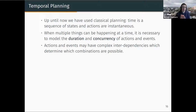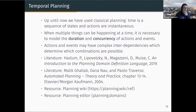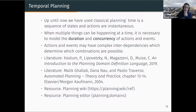These actions and events can have complex interdependencies which determine which combinations are possible — for example, maybe it's possible to unload multiple packages from a truck in parallel, but not while the truck is also driving away. There are two books I'd recommend: Automated Planning Theory and Practice, which has a chapter on this topic, and more recently An Introduction to the Planning Domain Definition Language, which covers everything you need to write PDDL. There's also planning.domains online editor and a planning wiki being written by a PhD student at King's College, which has an excellent reference on PDDL syntax and a list of planners you can try.